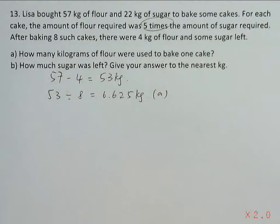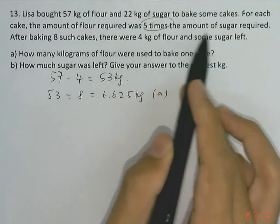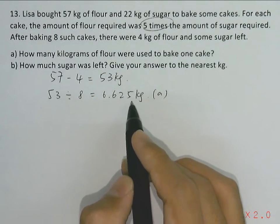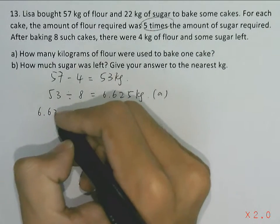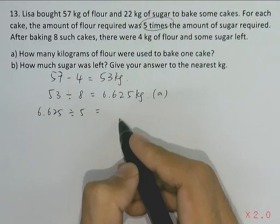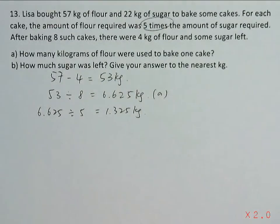We know that the amount of flour used was five times the amount of sugar required. So to find the amount of sugar used for each cake, we take 6.625 divided by 5, and we have 1.325 kilograms of sugar for each cake.